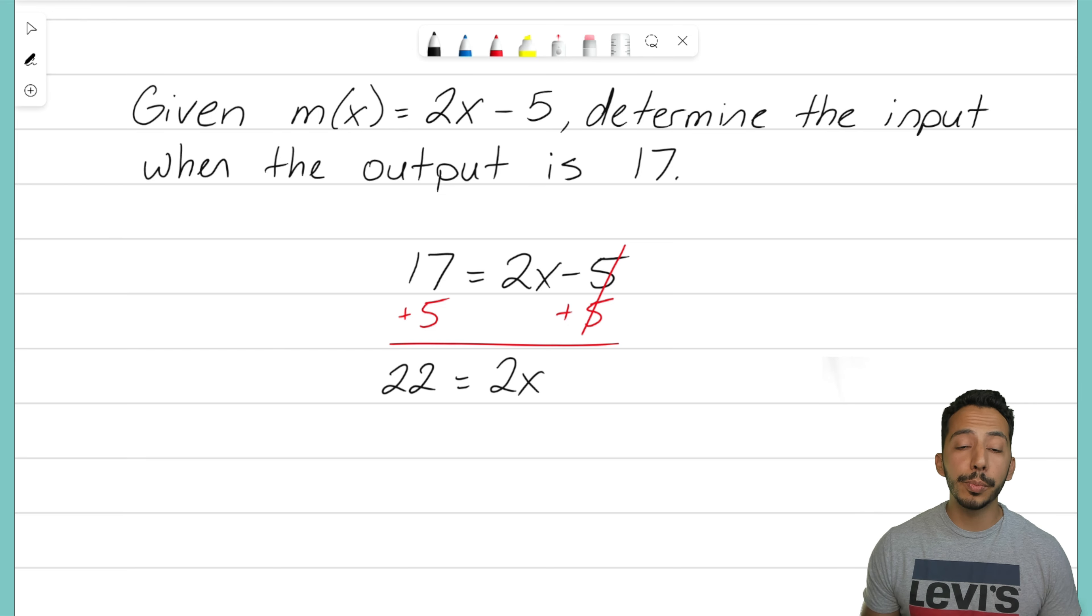We almost have our x variable by itself. Unfortunately we have 2x's. I only want 1x. So what I need to do with that is divide both sides by positive 2. By doing that these on the right side are going to become 1 because 2 divided by 2 is 1. I'm left with just one x value. On the left side there we got to figure out what is 22 divided by 2. Half of 22 ends up being 11.